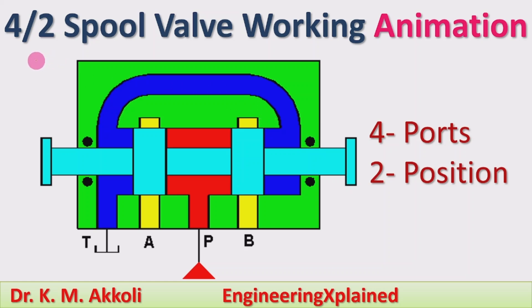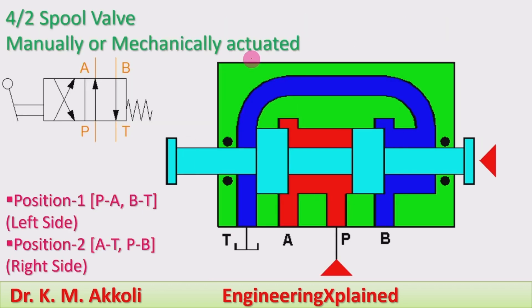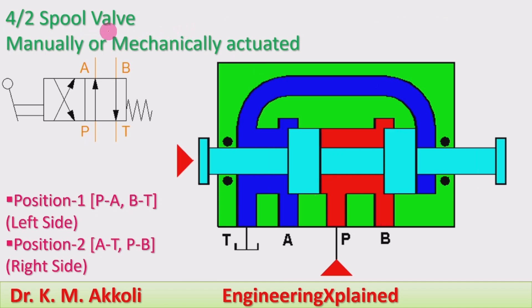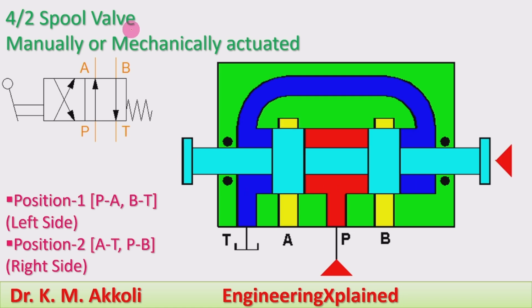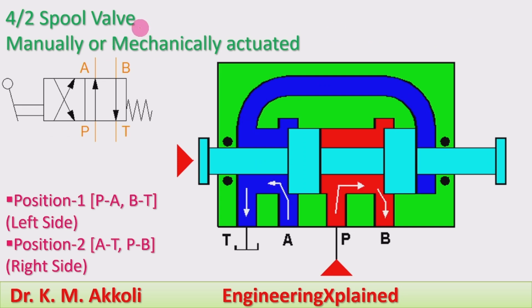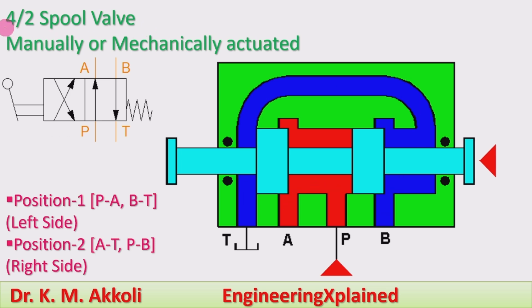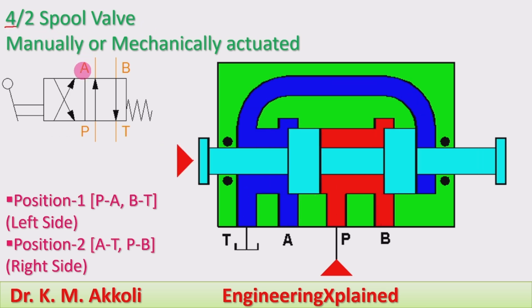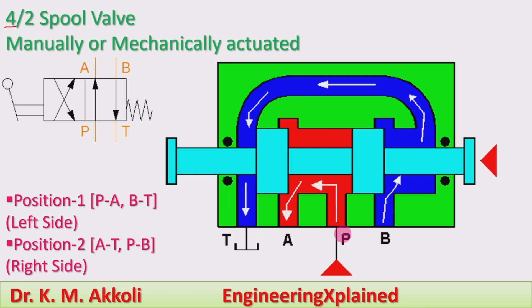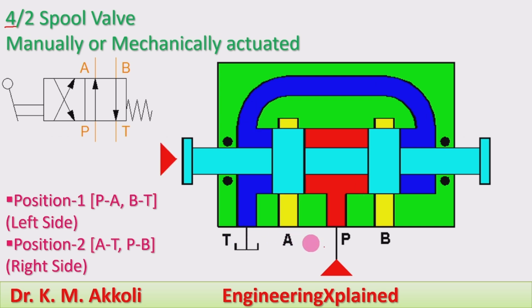Welcome to this session. I am going to explain the working of a 4 by 2 spool valve with animation. The '4' means it is the number of ports for the valve — there are four ports: T, A, P, and B.